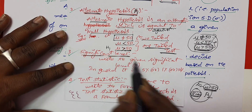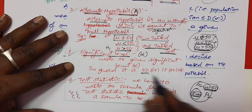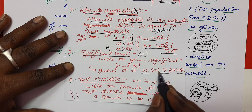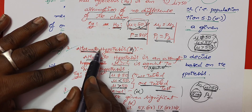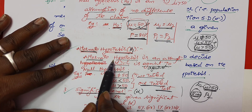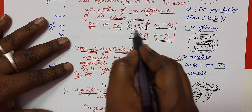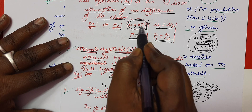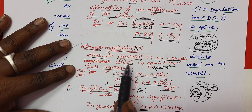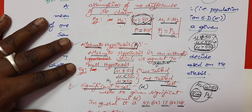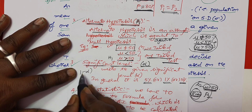The third step is the significant level. This significant level represents alpha. In the problem statement, you will find a significant level of 5%, 1%, or 10%. If you accept the null hypothesis, you accept a significant level — an alpha value. If you accept a confidence level in the interval estimation, then you accept a 1-minus-alpha percentage.